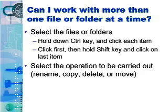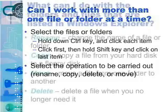Expanding an icon displays the next level of the storage hierarchy, usually a collection of folders. A device icon or folder can be opened by clicking directly on the icon rather than on the plus sign. Once an icon is opened, its contents appear in the pane on the right side of the Windows Explorer window. In addition to locating files and folders, Windows Explorer provides a set of procedures that help you manipulate files and folders.